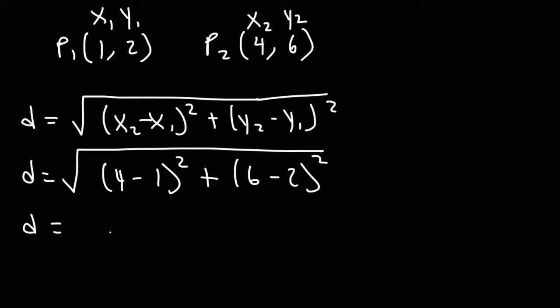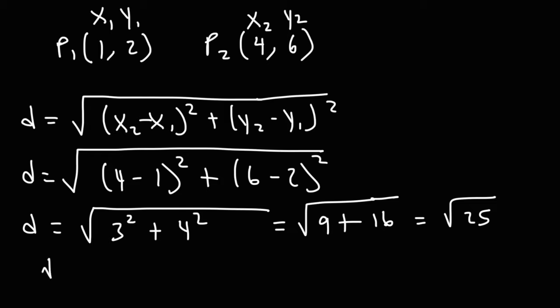And now let's do the math. So 4 minus 1 is 3. 6 minus 2 is 4. 3 squared, that's 3 times 3, which is 9. 4 squared is 4 times 4, which is 16. 9 plus 16 is 25. And the square root of 25 is 5. So that is the distance between these two points.